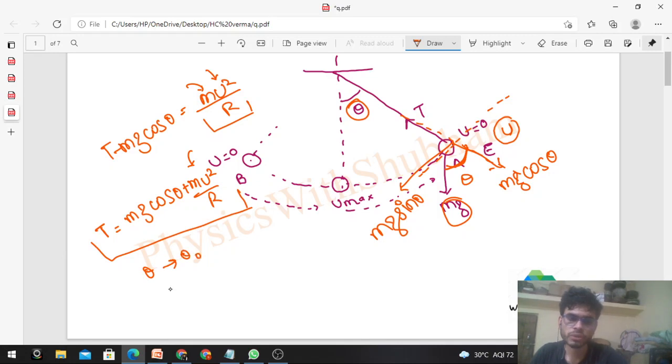In the question we have two things: theta is θ₀, and at the extreme position, u is zero. So T will be mg cos θ₀. Simple.